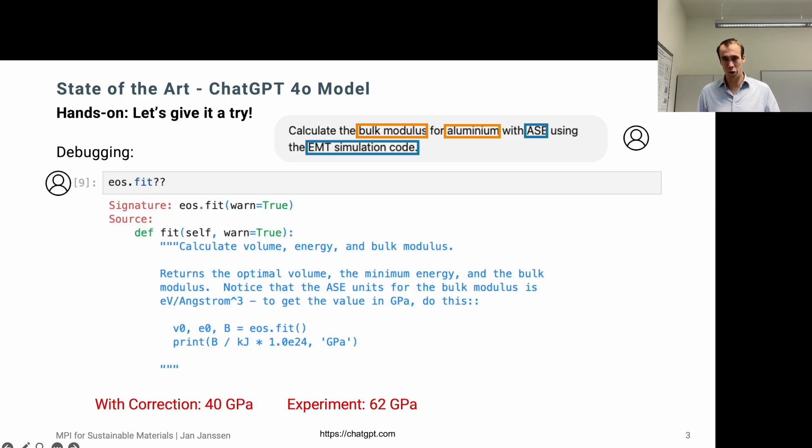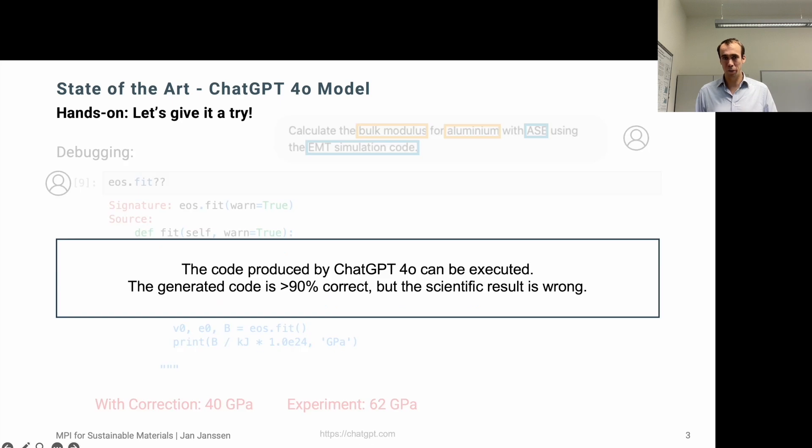If we look into the fitting function or the documentation more specifically, we see that the atomistic simulation environment internally uses electron volts and angstrom. So to get the bulk modulus in gigapascal, we have to convert the units. With this correction, we get a response of 40 gigapascal, which is much closer to the experimental reference.